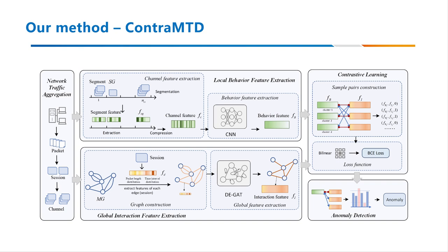Based on this, we extract local behavior features and global interaction features from normal network traffic by our proposed methods, ICC and DEJT respectively. We then apply contrastive learning to learn the relationship between them, and finally detect malicious traffic through a multi-round scoring approach.